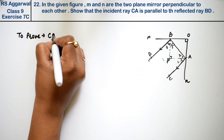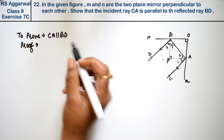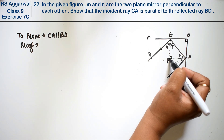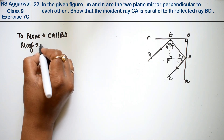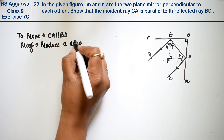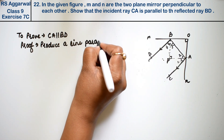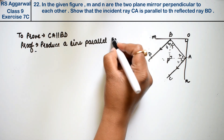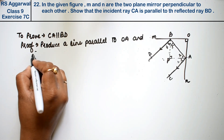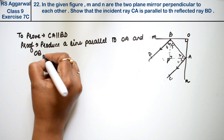In the proof, we know these two mirrors are perpendicular to each other. So from B and A, we produce lines — from A and from B — which we call point P, where they meet. We produce a line parallel to OA and parallel to OB from points A and B respectively, meeting at P.